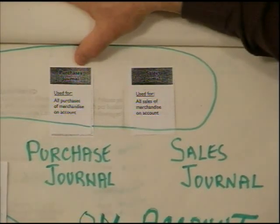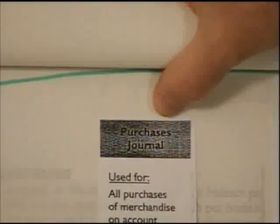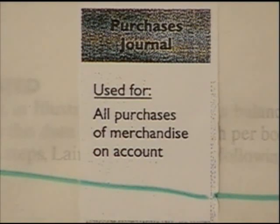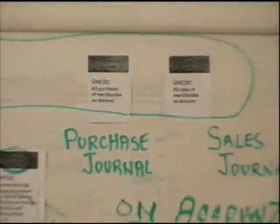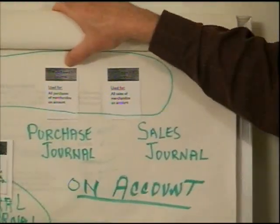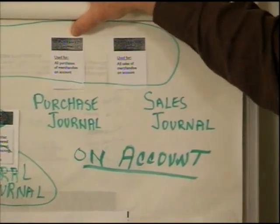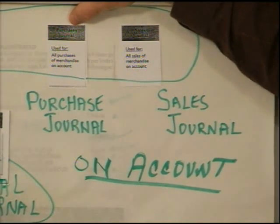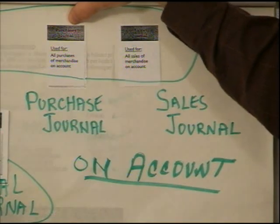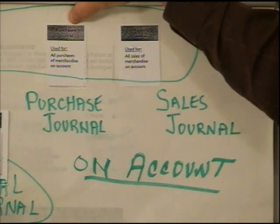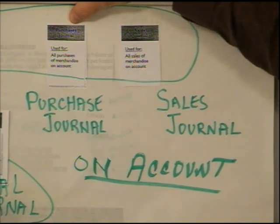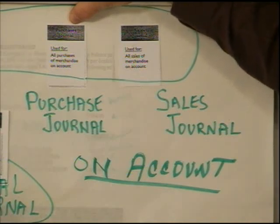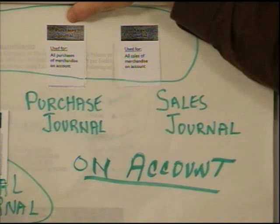The first of these is the Purchases Journal. It's for purchases, but only purchases on account. As you can see, I've grouped these two journals together because if you purchase something on account, you're not using cash. So it would be purchases only on account — that's the only time. When you go to pay for those purchases, it doesn't affect this journal, because when you're paying you're using cash going out, and that would be your Cash Payments Journal. This journal is only for purchases on account.